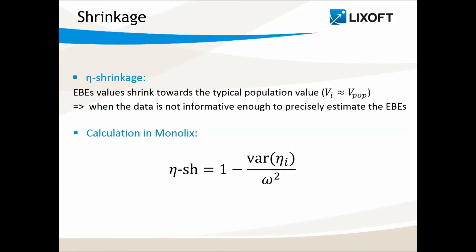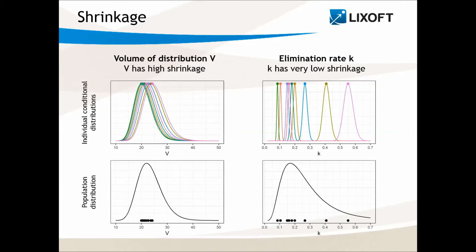To understand shrinkage more intuitively, let's take the example of two parameters, one with shrinkage and one without shrinkage. In this example, the data is sparse and does not permit to precisely estimate the volume of each individual. So the individual volume values are uncertain, and the conditional distributions are large. Here, one curve represents the conditional distribution of one individual.